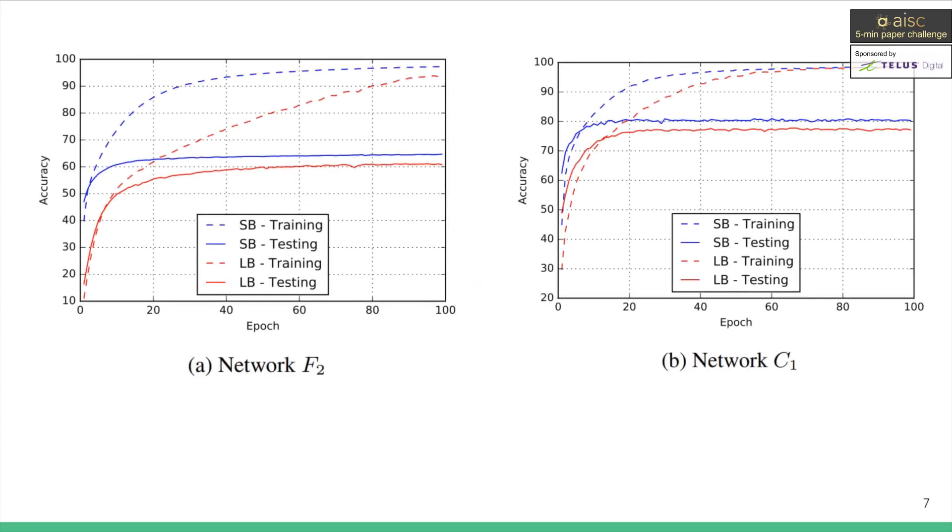And here are the accuracy results during the 100 epochs of training. We can observe that in both SB and LB regimes, the training accuracies, which are displayed as dotted lines, converge to similar values. However, for testing accuracy, which indicates performance on unseen data, we can consistently observe a gap between the two regimes. This tells us that there's a difference in generalization performance between SB and LB regimes.